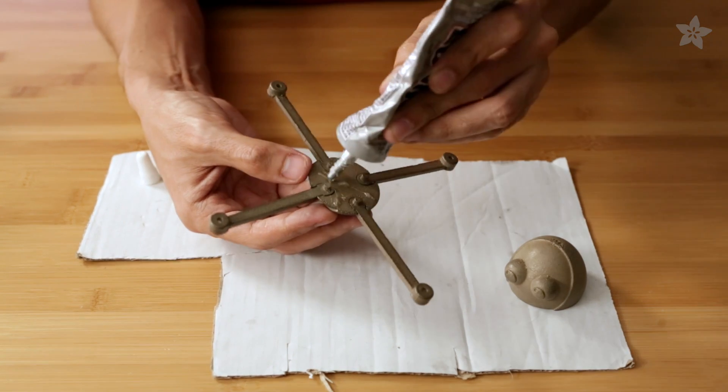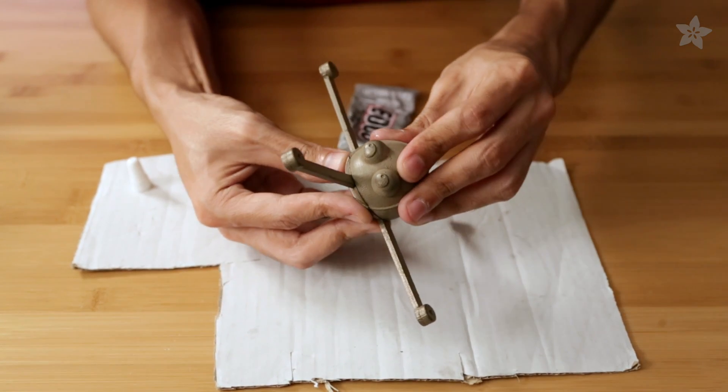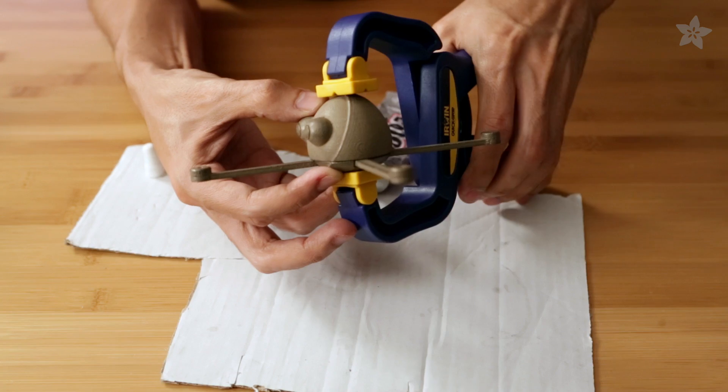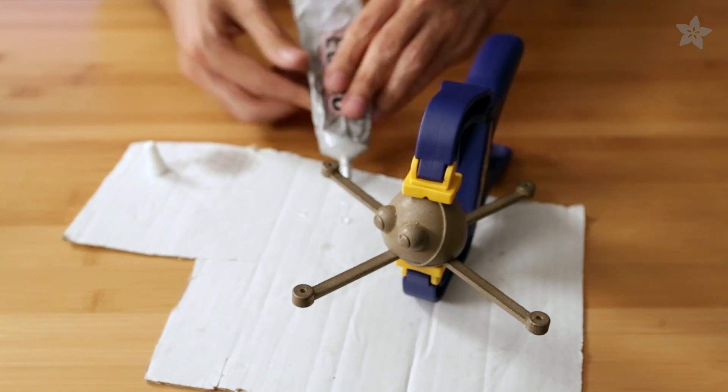A bit of E6000 adhesive will permanently bond these parts together. I used a clamp that locks so I can hold it in place tightly while I let the adhesive cure.